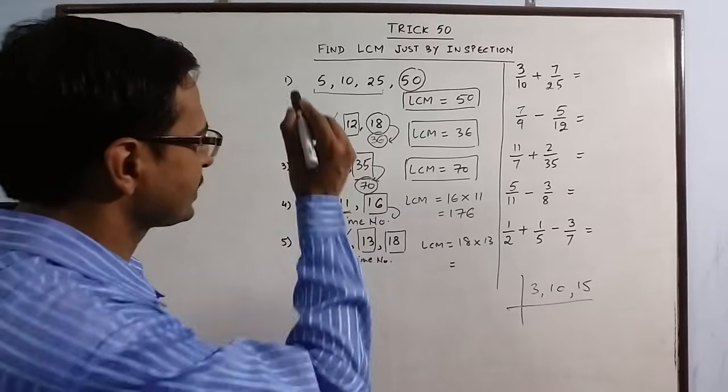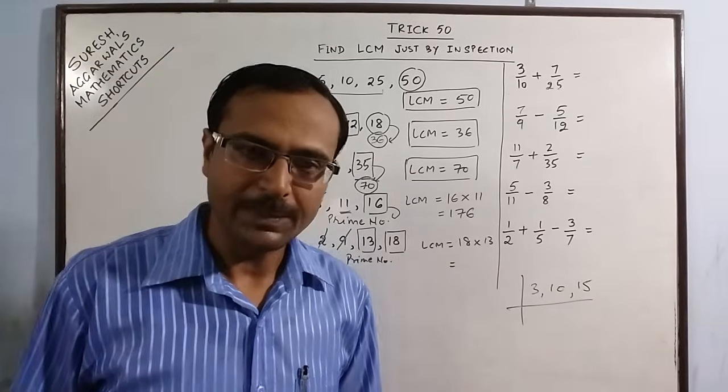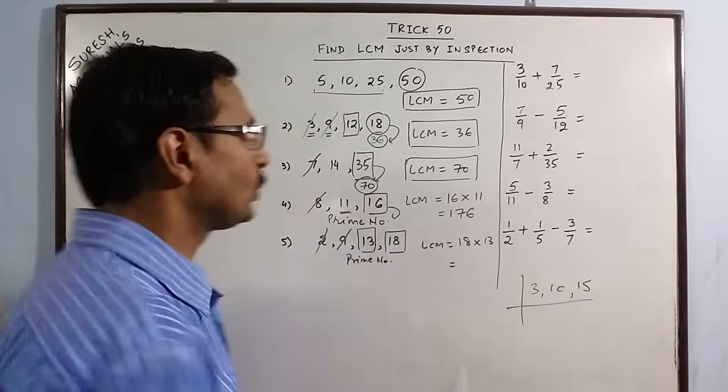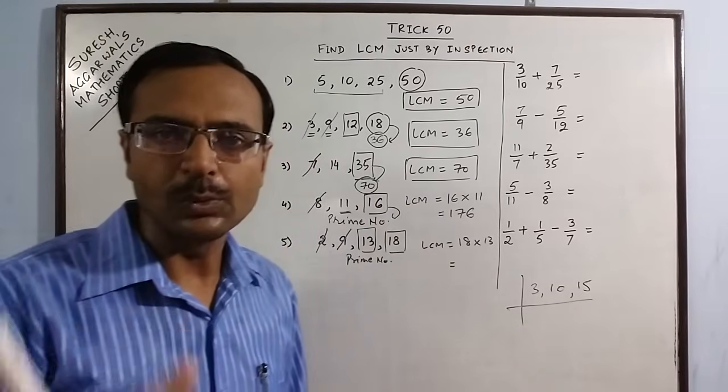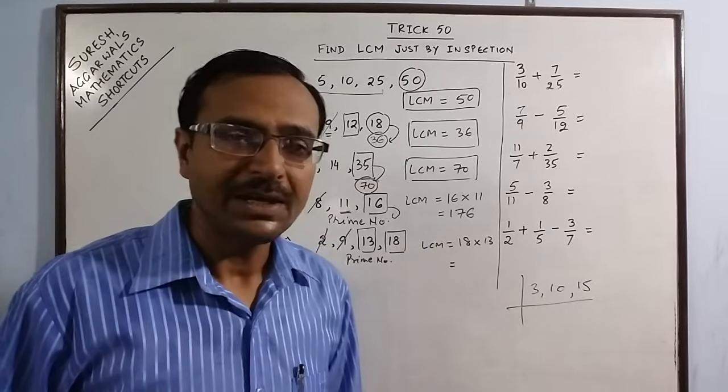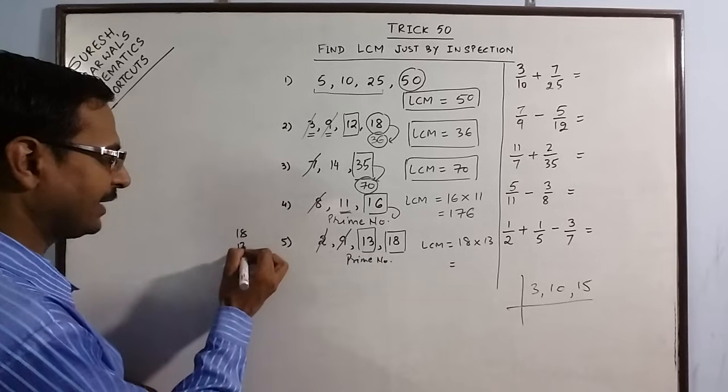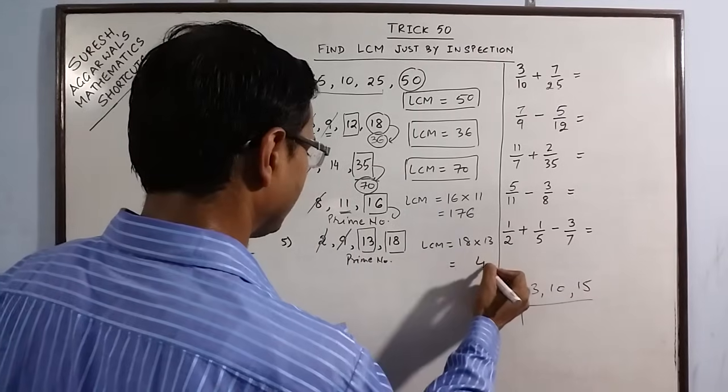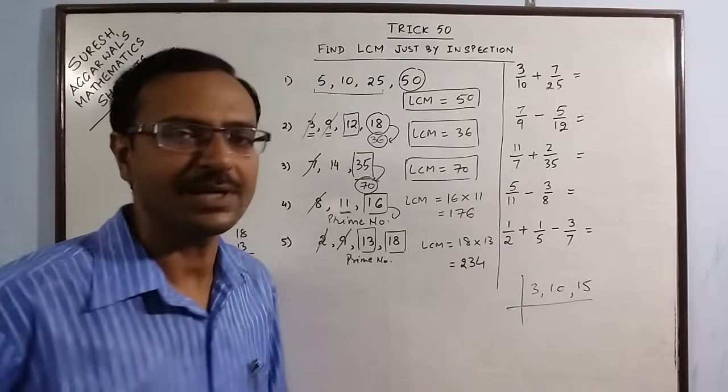So this is the process of finding the LCM in case of two numbers, three numbers, four numbers. You can just have a look at the numbers, just by using basic rules of multiplication, basic rules of divisibility, you can find out the LCM of these numbers. So we have the final answer here, 234 as the answer.